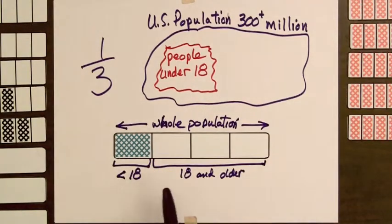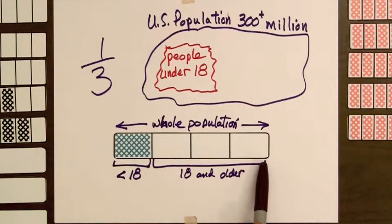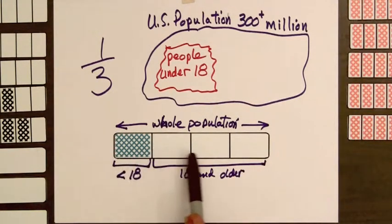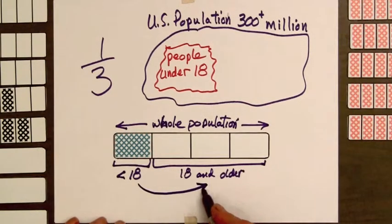So the ratio of the number of people under 18 years old to the number of people 18 years old and older is 1 to 3. We'll say the ratio is 1 to 3.